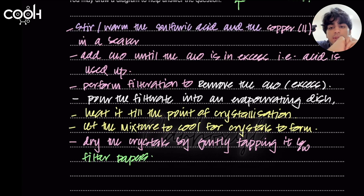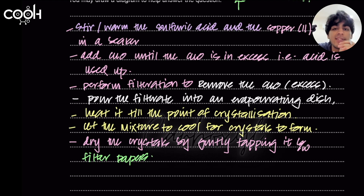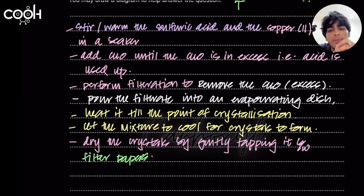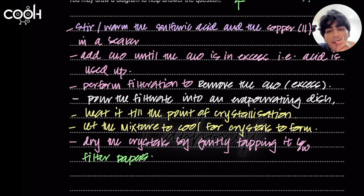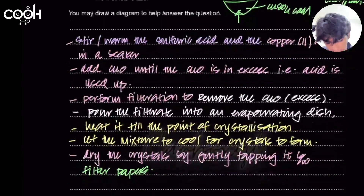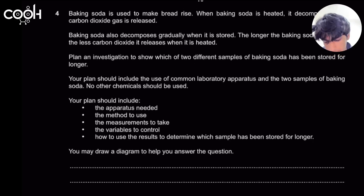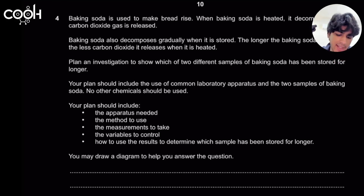We've written enough points for the Cambridge examiner to award full marks. Question fours are actually the easiest — question twos, fours, and threes. Question one can be challenging because it contains many precautions you'd only know from lab practice. ATP is essentially a full-marks paper if you've practiced. The next video will cover the baking soda question.